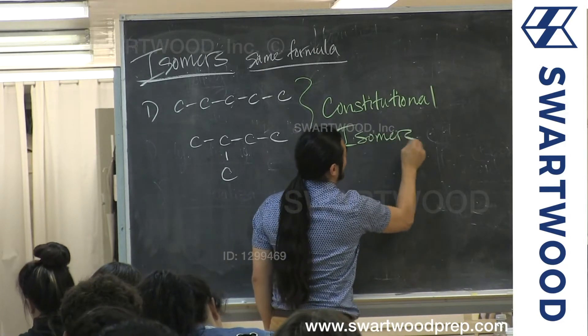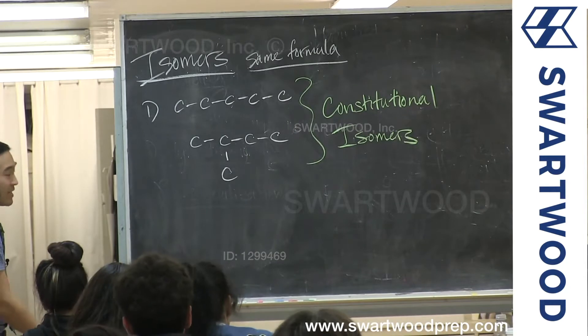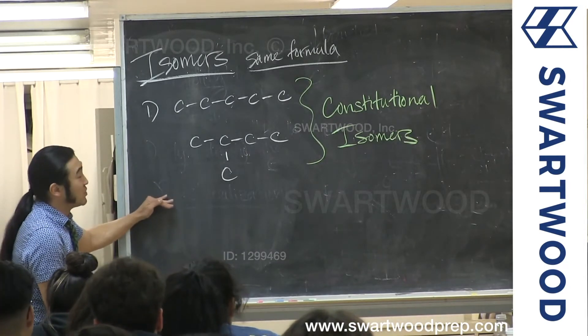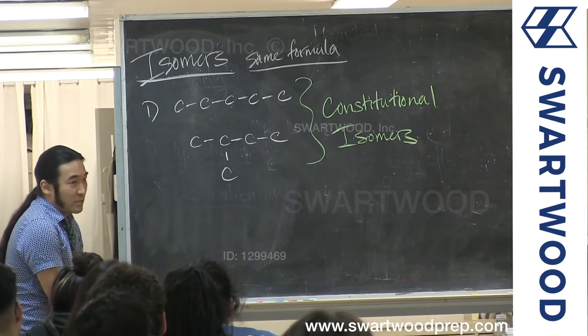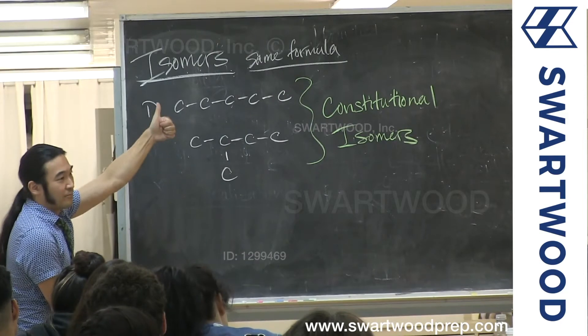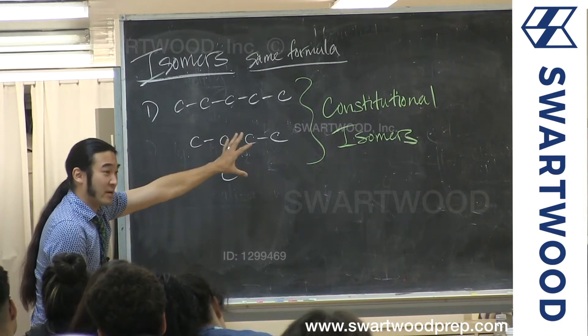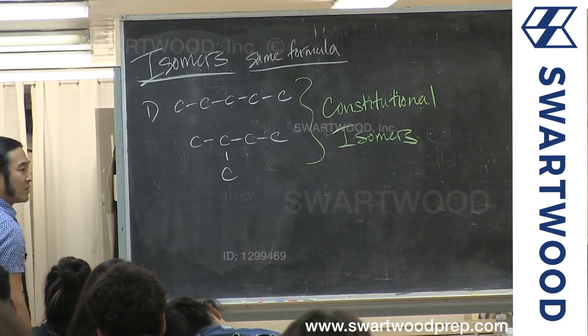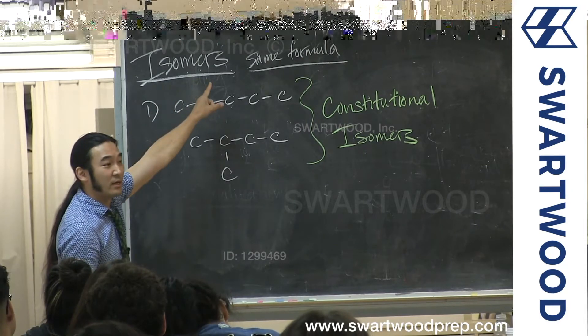So these are called constitutional isomers. These are the easiest. Same formula, different guys. From now on we will assume that everything we're talking about is non-constitutional. We have guys with the same formula that are hooked up the same way.